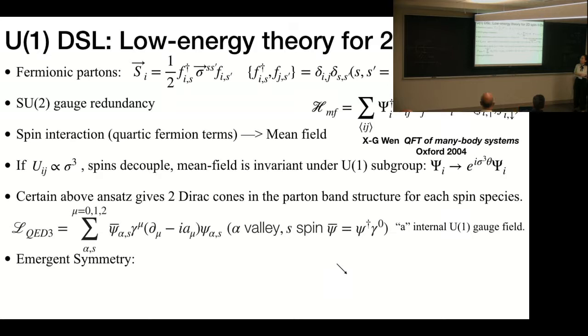Here we fractionalize the physical spin operator into fermionic partons. This introduces a SU(2) gauge redundancy, which can be viewed if we arrange the fermionic partons in this way. And this site carries a fundamental representation of this SU(2).